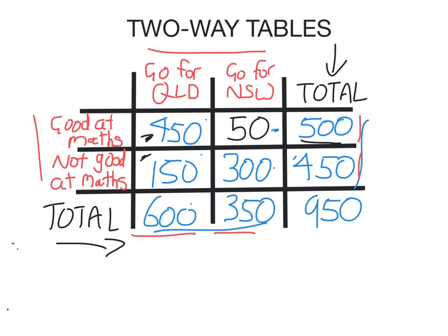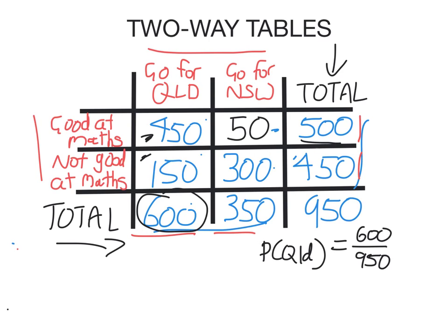So we can use this in probability questions. Let's say I want to find the probability that someone went for Queensland — that's very simple. I find all the students who went for Queensland, which is 600, divided by the total number of students. So if I pick a student at random, the probability they go for Queensland is 600 over 950, which is 12 over 19 — a little bit more than 0.6.